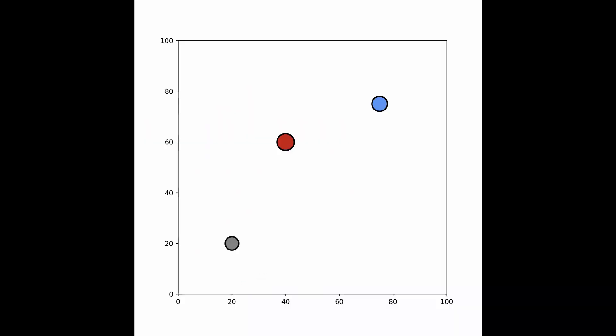For this video, we're going to keep things light and fun — no math. Instead, we're going to be playing a simple game of cat, mouse, and cheese. On your screen you have three little dots. Over on the bottom left, you have the mouse — pretend that's you for this video. Over on the top right, you have some cheese that you as the mouse would love to eat.